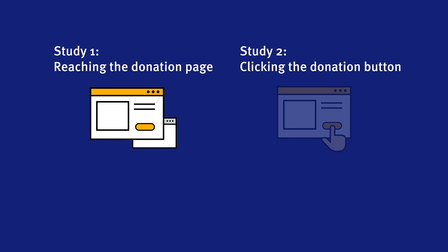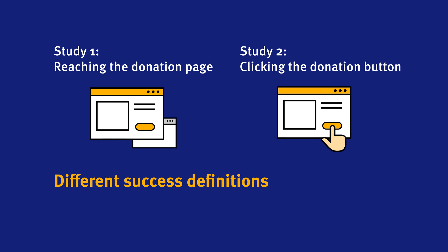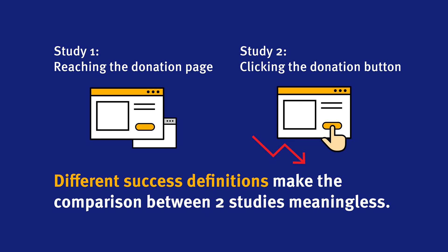Now, imagine that for the first study, success for the task of making a donation is defined as whether the participant reached the Make a Donation page, but for the second study, success is defined as whether the participant clicked the Make a Donation button on that page. These are very different definitions. If you find that the success rate drops in the second study, it could be not because the design was worse, but because the success definition changed. A comparison between the success measures obtained from the two studies would be meaningless.